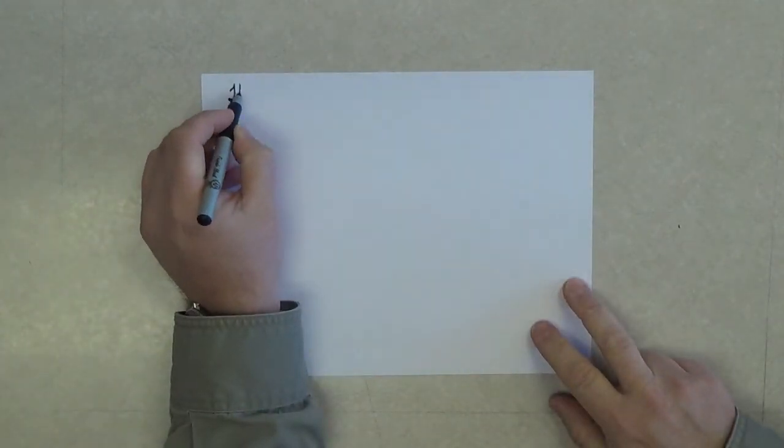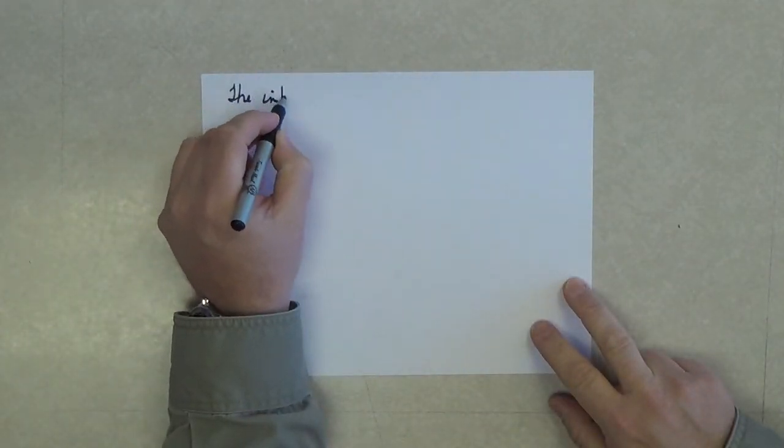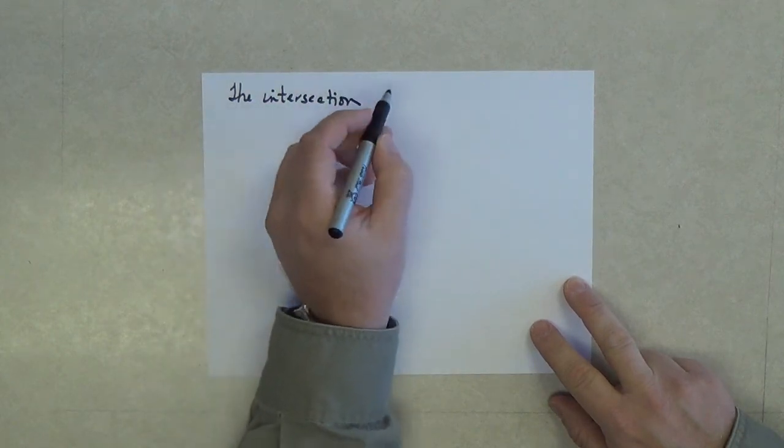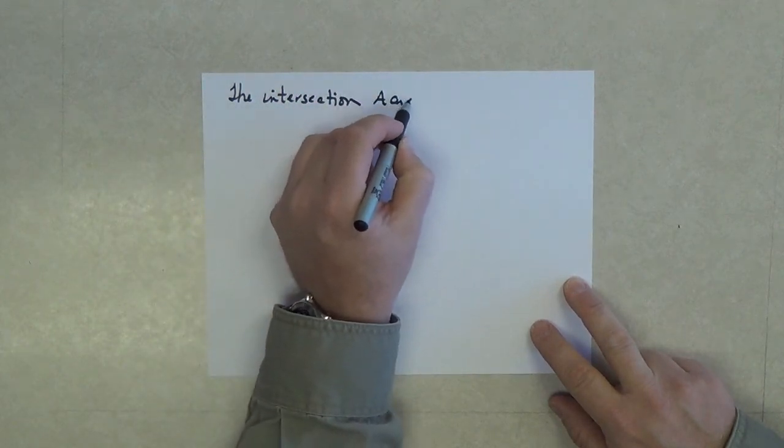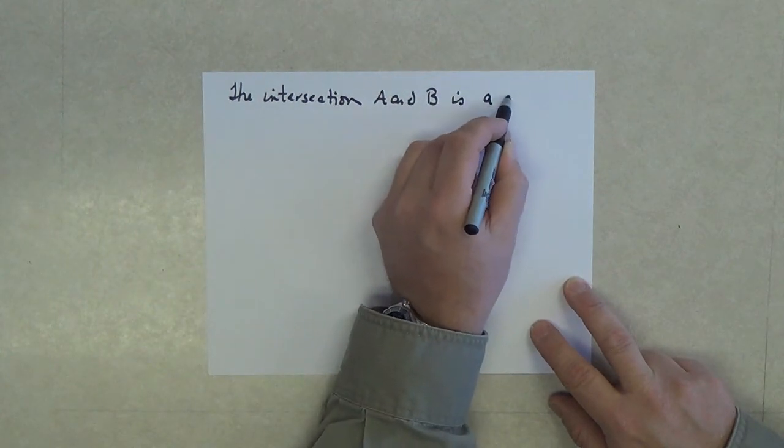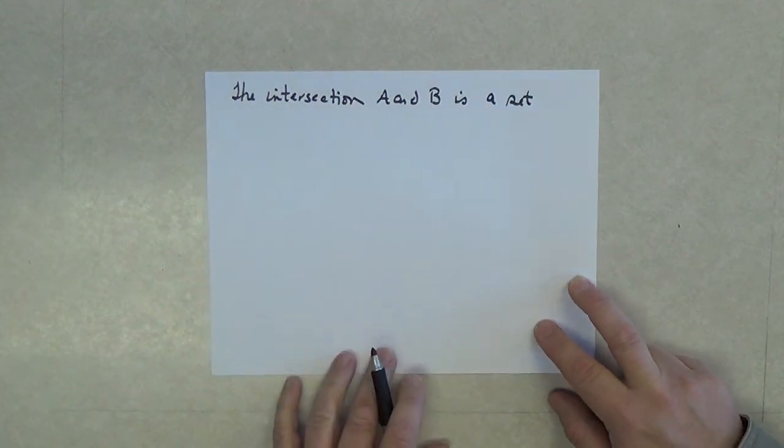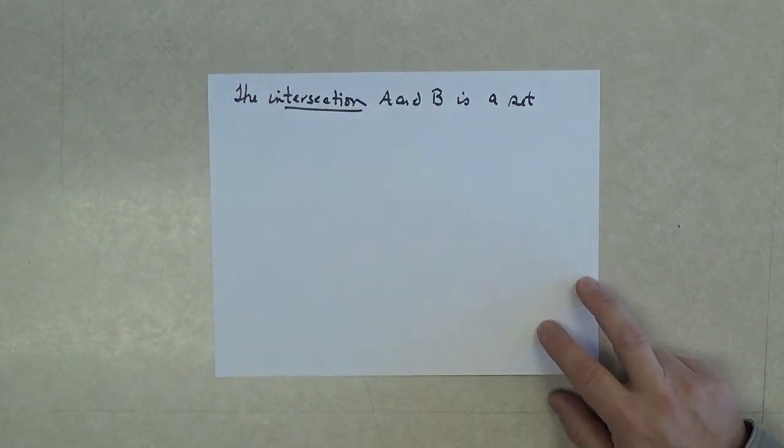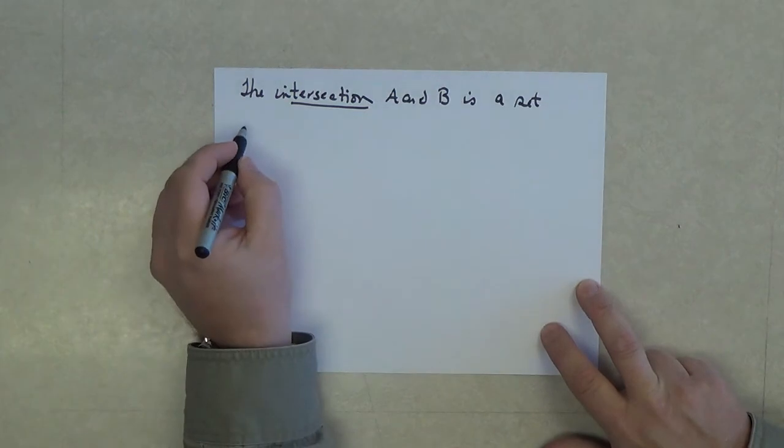There's another word in the English language that crops up here in math. It is the idea of the intersection. The intersection of two sets, A and B, is a set. Notice, just like with union, the intersection is a set.